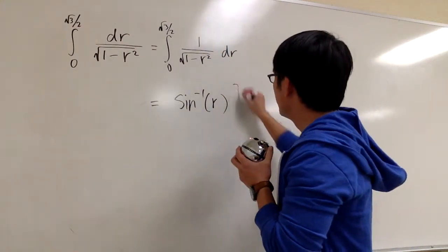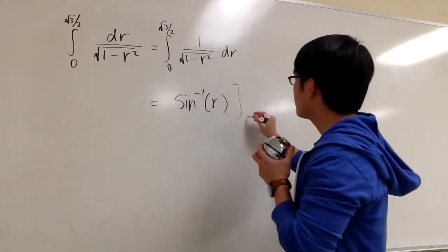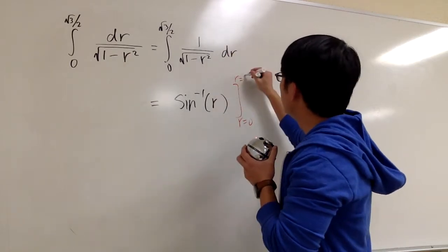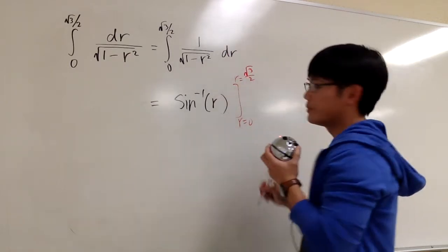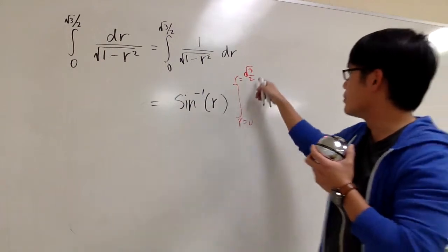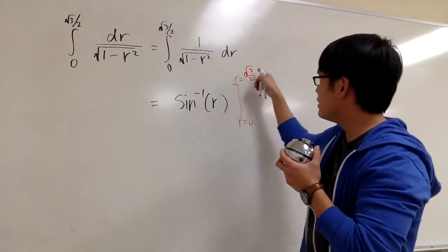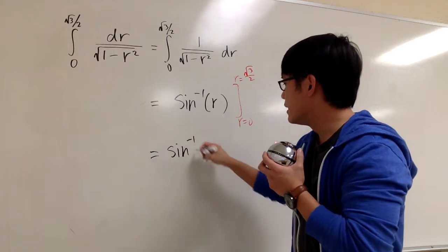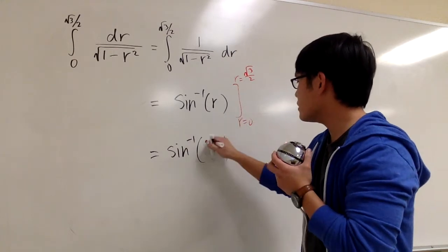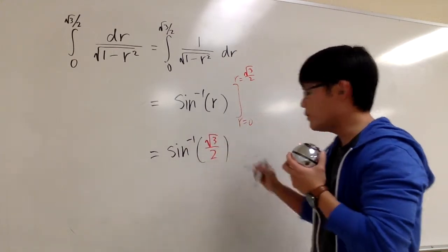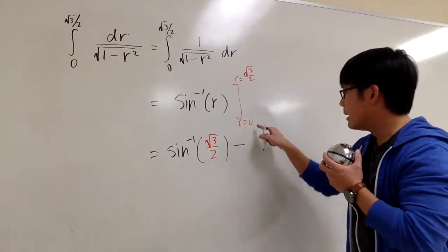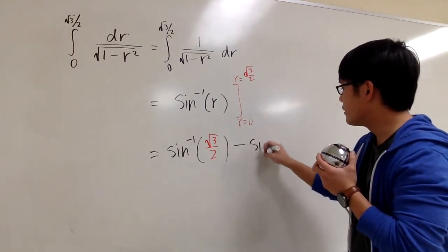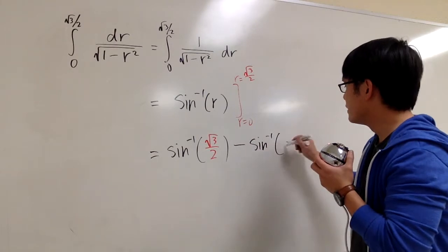And now we have to plug in numbers. We are going to plug in r from 0 up to square root of 3 over 2. So we plug in square root of 3 over 2 into r, giving us the inverse sine of square root of 3 over 2, minus plugging in 0, giving us the inverse sine of 0.